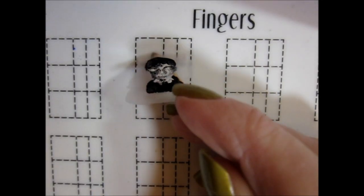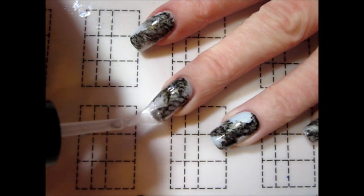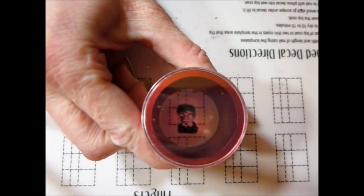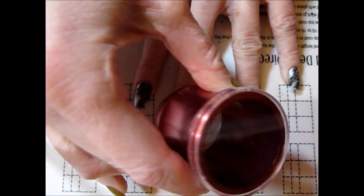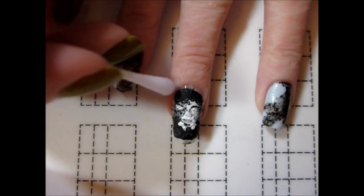I used an orange stick to gently remove the decal from my mat and trimmed it. I then applied a top coat to my middle nail and used a clear stamper to apply the decal to the wet polish. The stamper helps to smooth out any air bubbles underneath the decal, but you can also place the decal by hand.